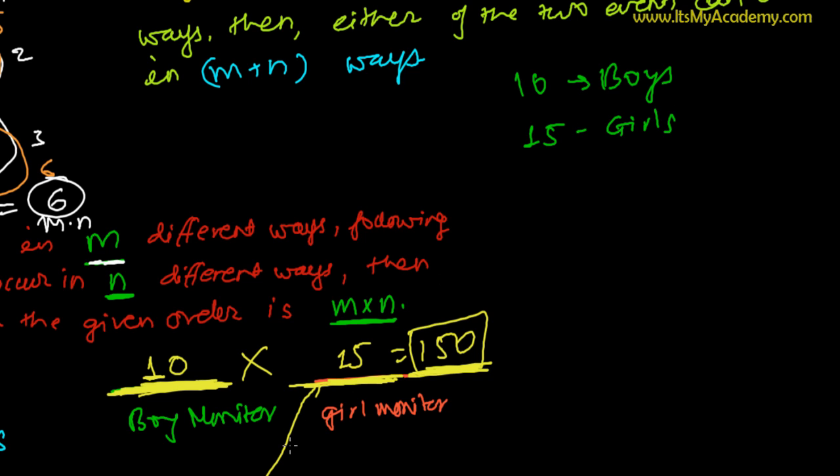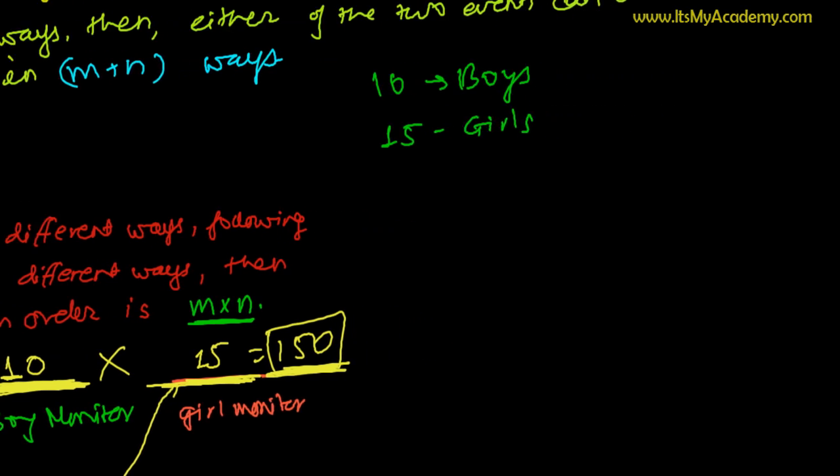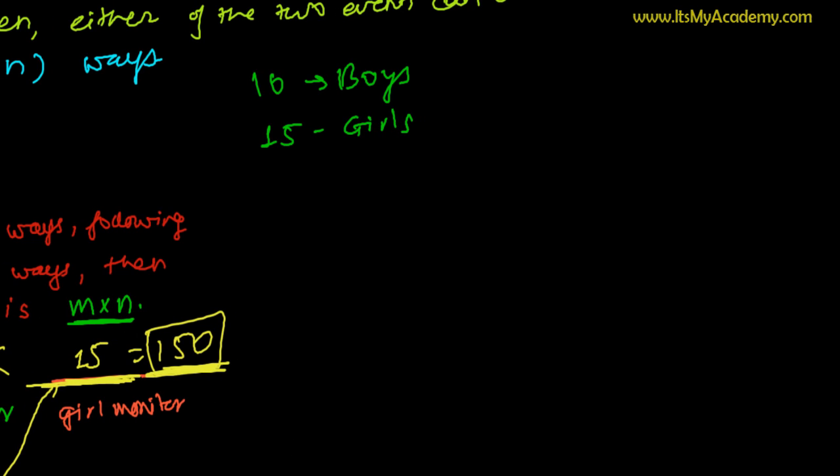And this time, the teacher is not going to make two monitors, the teacher is going to make one monitor. So there is one seat, just one seat, and the seat is for the monitor. Now the teacher wants to appoint one monitor out of these 10 boys and 15 girls.